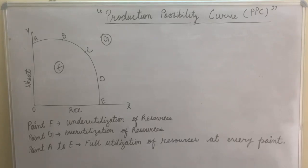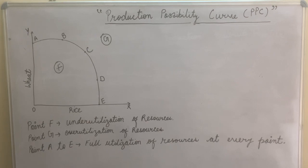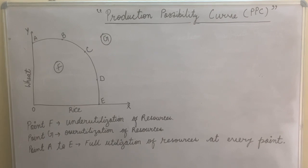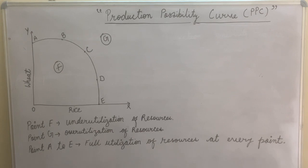Point F represents under-utilization of resources — resources are not being fully used. Point G represents over-utilization of resources — also not a good state. Points A to E represent full utilization of resources at every point, forming the PPC curve line. Points F and G are not on the PPC, while points A to E represent the ideal, fully utilized production possibilities.